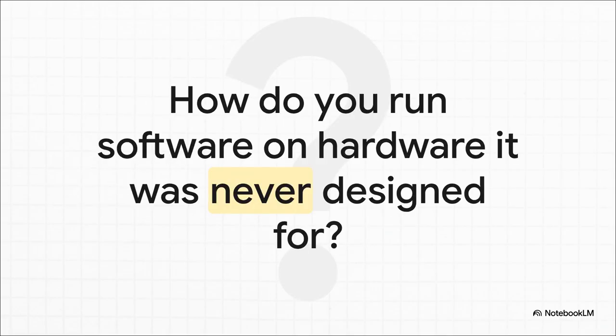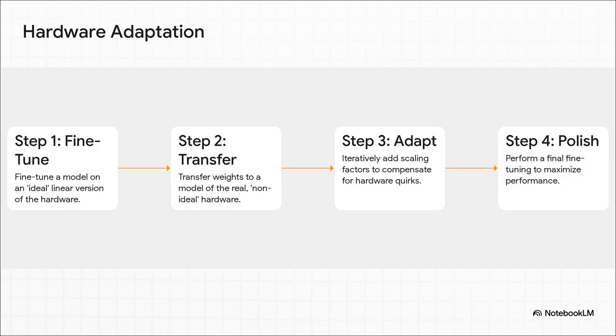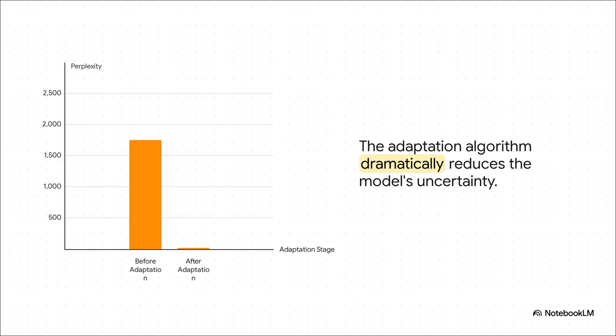And this leads us to the really fascinating puzzle. How do you bridge that gap? How do you get the software to not just put up with the hardware's weird personality, but actually learn to work with it? What the researchers came up with is just brilliant. It's a four-step process. First, they train the AI on a perfect simulated version of the chip. Then, they move it over to a simulation of the real quirky hardware. And here's the secret sauce: they run a special algorithm that tweaks the model step-by-step, basically teaching it how to account for all the hardware's little imperfections. A final quick polish, and it's good to go. And the results are just wow. This chart shows a metric called perplexity. You can think of it as a confusion score for the AI. Lower is way better. Before the fix, the model is totally lost, with a perplexity over 1700. It's just spitting out nonsense. But after their process, it plummets to just 21. That's not just an improvement, it's the difference between chaos and coherence.